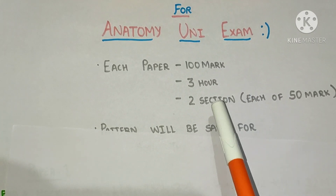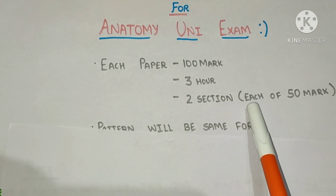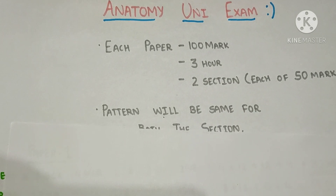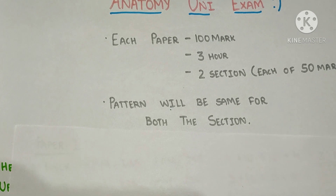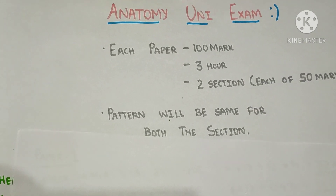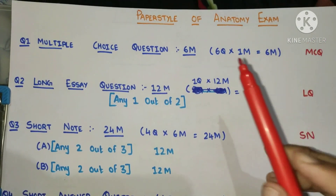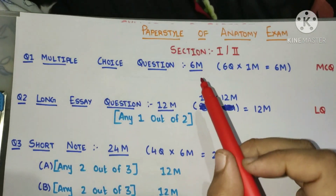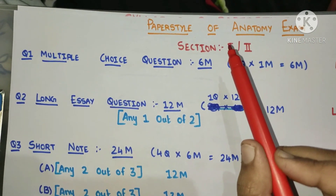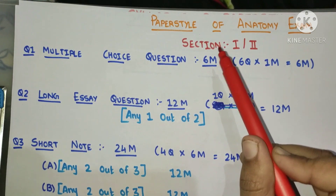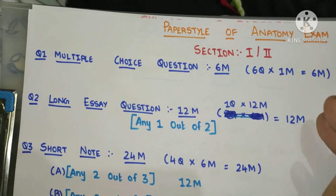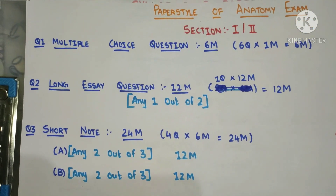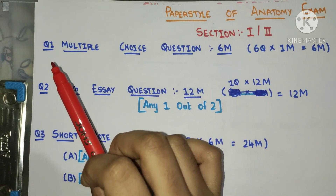In each paper there will be two sections, so each section will be of 50 marks. The paper style will be the same for both sections, whether it is section one or section two. So section one will be of 50 marks and section two will be of 50 marks.